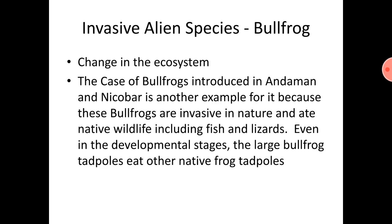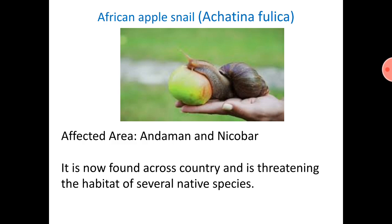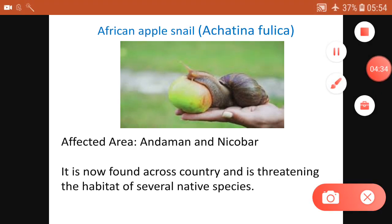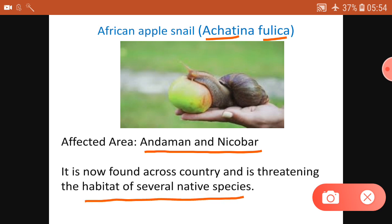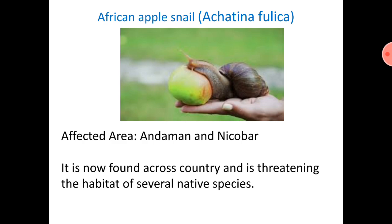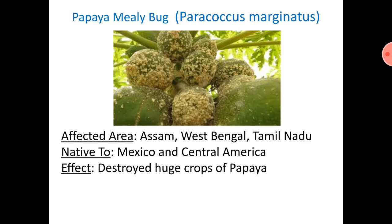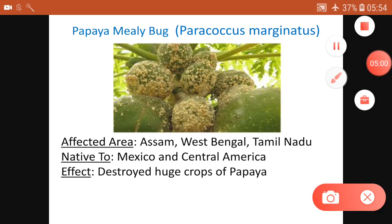Whenever we find invasive species, we have to identify them as enemies of biodiversity. The African Apple Snail, Achatina fulica — the area affected is Andaman and Nicobar, and it is now found across the country. It has threatened habitats and several native species. Just for remembering, I am showing you a picture where it is trying to eat an apple — see this horrible picture.